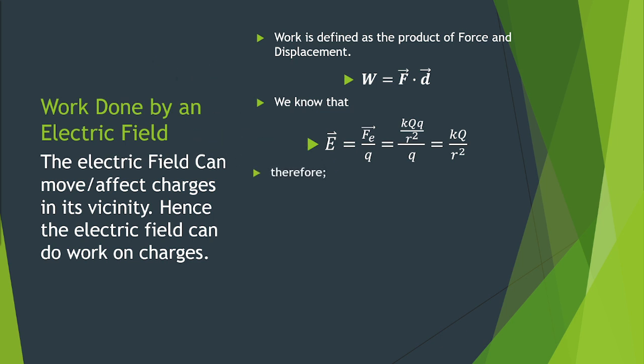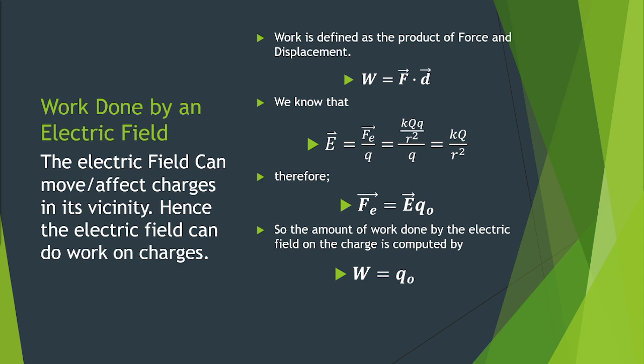And therefore we see that the electric force F sub E is equal to electric field E times charge Q. So the amount of work done by the electric field on the charge is computed by substituting this expression for F. We find that work W is equal to the product of charge Q times the electric field E times the displacement.